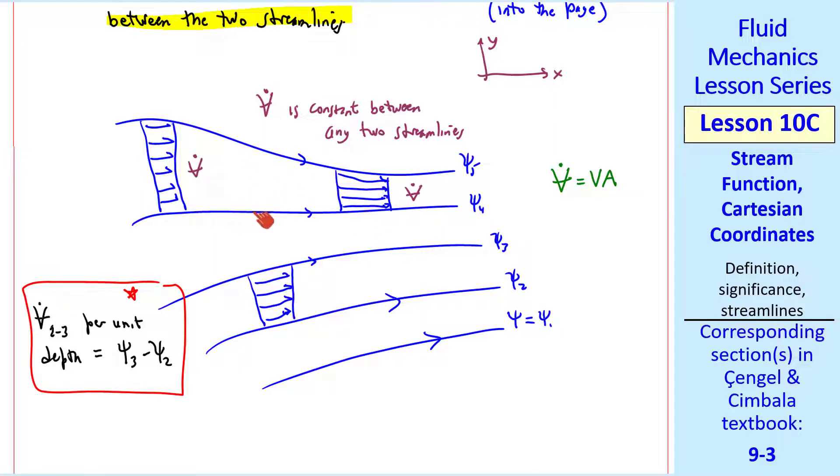So the volume flow rate here has to equal the volume flow rate here. And in this case, since the streamlines are converging, the area is getting smaller, and thus the speed has to increase. But at any location between streamlines 5 and 4, V dot per unit width into the page is psi 5 minus psi 4.